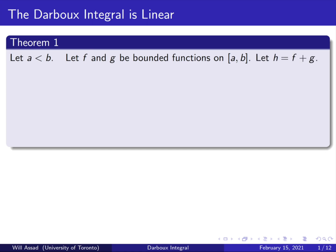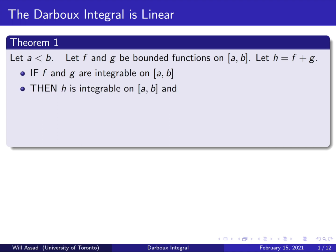We're going to let h be equal to the sum of f and g, and we're going to assume f and g are integrable on the closed interval [a, b]. Then we also have that h is integrable on [a, b], and the integral from a to b of h(x) dx is equal to the integral from a to b of f(x) dx plus the integral from a to b of g(x) dx.